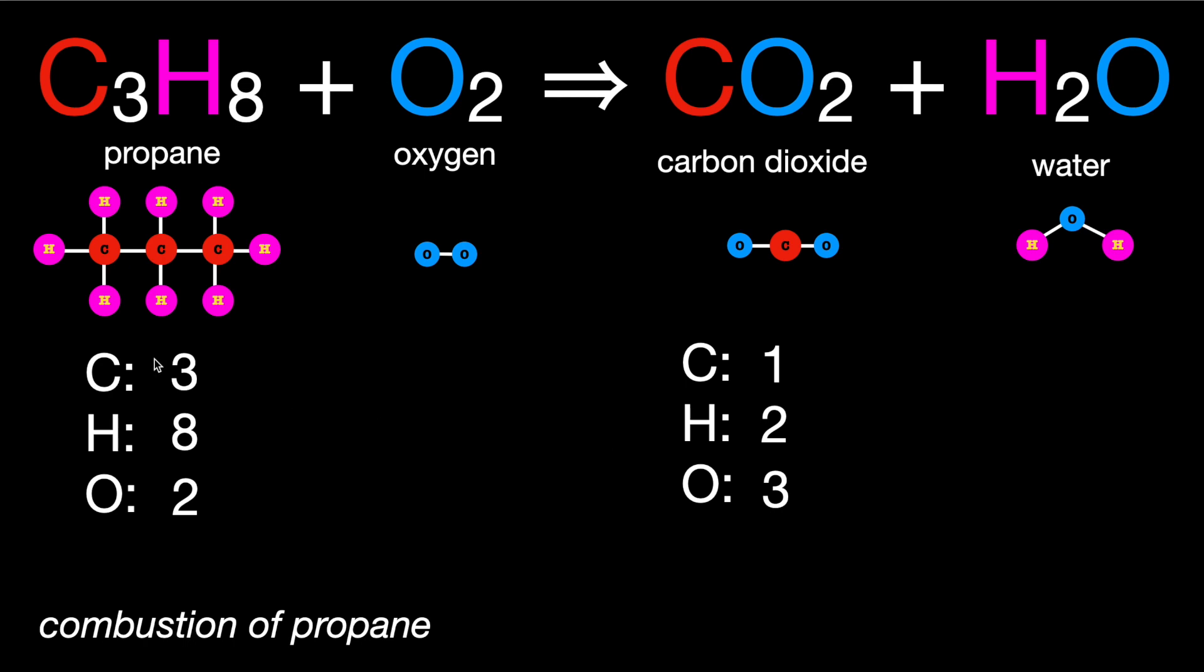So first, let's try to balance the carbon, which seems pretty easy. We have 3 on this side. We need to find 3 on this side. Let's start by multiplying this carbon dioxide by 3, and by our recount now, we have 3 carbons. And oxygen changed. We have 1, 2, 3, 4, 5, 6, 7.